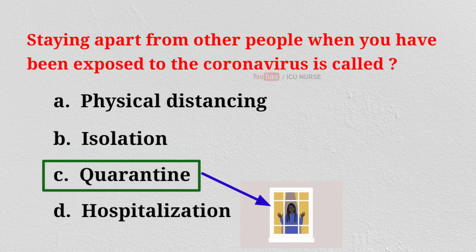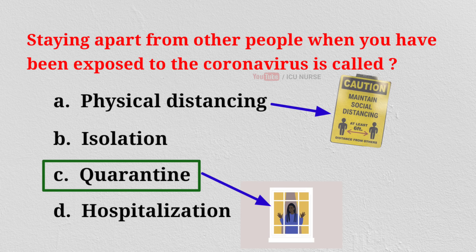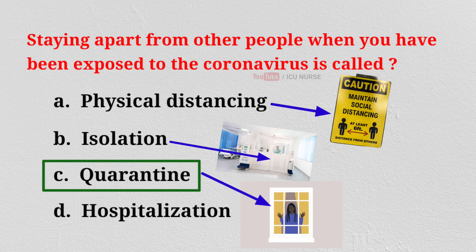A person who has been exposed to an infectious illness might be under quarantine to wait and see if they will become sick. Physical Distancing refers to staying at least 6 feet apart from someone to avoid spreading disease. Isolation is keeping a COVID patient separately from other patients in a healthcare setting.